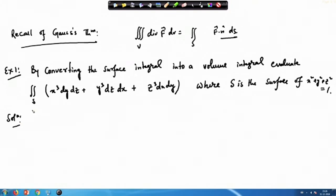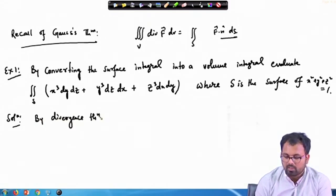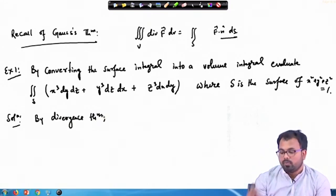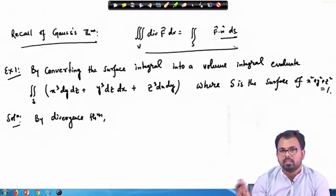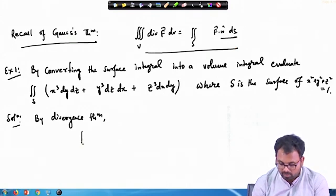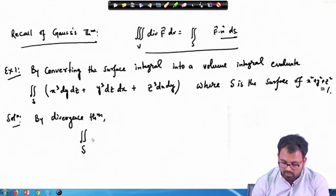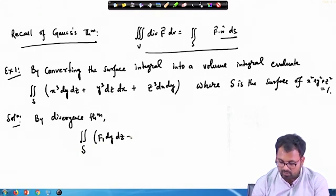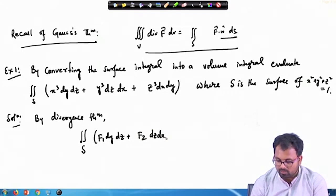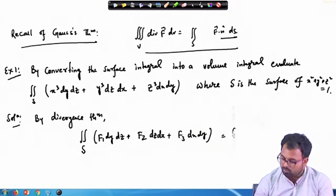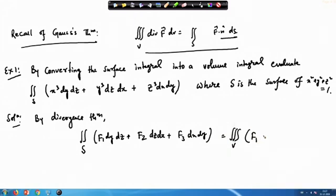From Gauss Divergence Theorem we know that the surface integral over S of f₁ dy dz + f₂ dz dx + f₃ dx dy equals the volume integral over V of (∂f₁/∂x + ∂f₂/∂y + ∂f₃/∂z) dV, which is basically dx dy dz. This is the required form in terms of Cartesian coordinates x, y, and z.